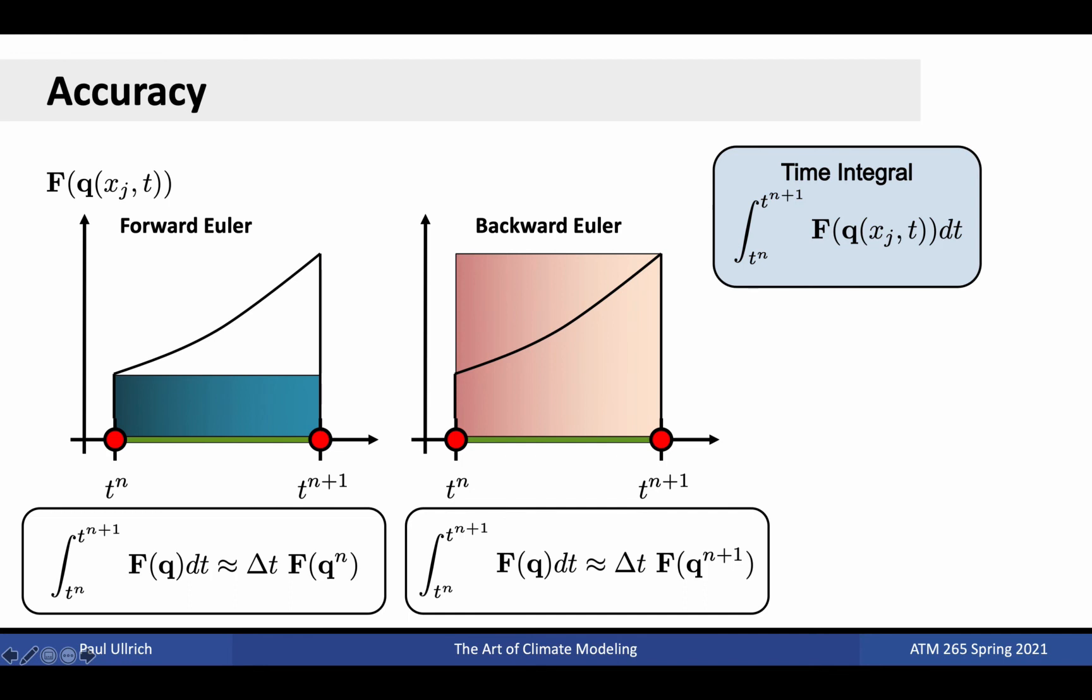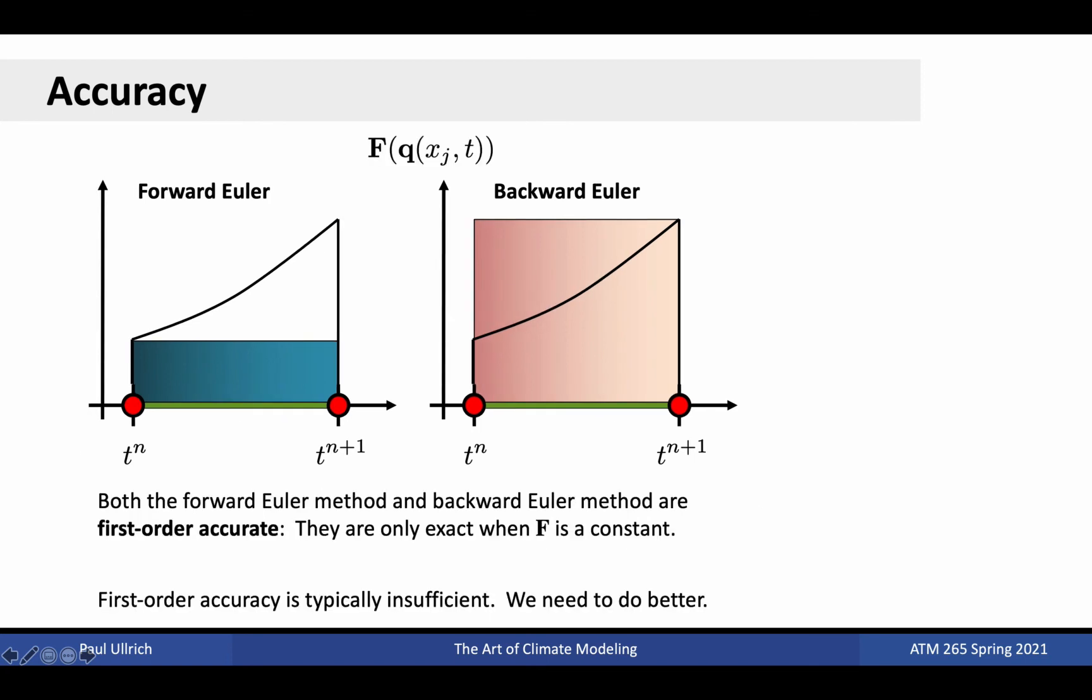In the case of the forward Euler method, the integral is approximated as delta t times f at time n. In the case of the backward Euler method, the integral is approximated as delta t times f at time n plus 1. As is obvious from these plots, both the forward Euler method and the backward Euler method are crude approximations to the actual integral under the curve. In fact, we refer to both forward Euler and backward Euler methods as being only first order accurate. This means that these methods are only exact when the time tendency f is constant. When it comes to atmospheric modeling, first order methods are generally insufficient, and when they are stable, can be shown to produce poor, highly diffusive solutions in the dynamical core. We need to do better.